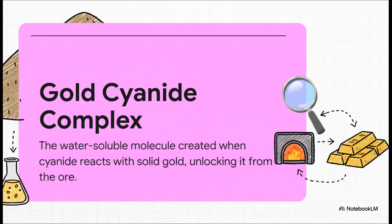So what is the cyanide actually doing? Well, it's not just cleaning the gold. It's much cooler than that. In the presence of oxygen from the air, the cyanide reacts with the solid gold particles and creates a totally new water-soluble molecule called a gold-cyanide complex. And that is the absolute key to this whole thing. It transforms solid, stubborn gold into something that can just be carried away by water.